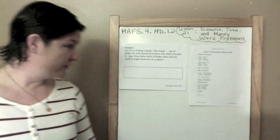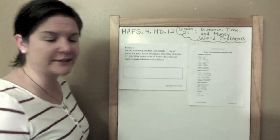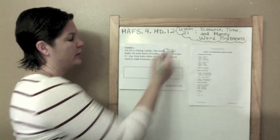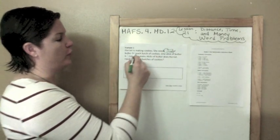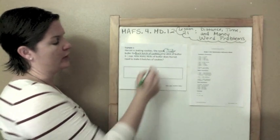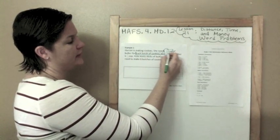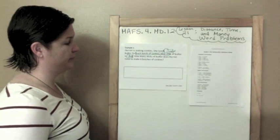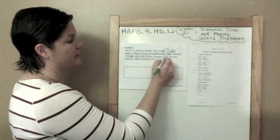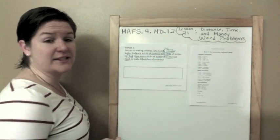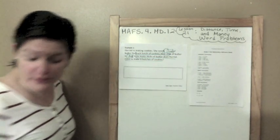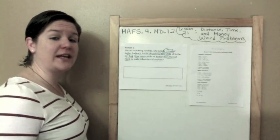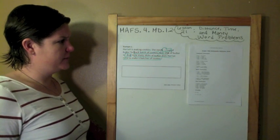Harriet is making cookies. She needs one fourth cup of butter for each batch of cookies. One stick of butter is one half of a cup. How many sticks of butter does Harriet need to make six batches of cookies? Oh my goodness. This one looks a little difficult. Let's make some sense of this problem.